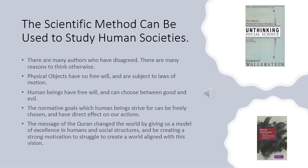But this is obviously wrong for many reasons. The simplest is that the particles we study in physics don't have any free will and they don't have any ideals. The essence of a human being is the ability to choose between good and evil, and therefore there are no laws which describe our behavior. We have normative goals — to strive for excellence — and we also have some bad characteristics and a desire to do evil, and these are in struggle in our souls. The message of the Quran teaches us about these characteristics of human behavior, which are the basis of an Islamic approach to the social sciences.